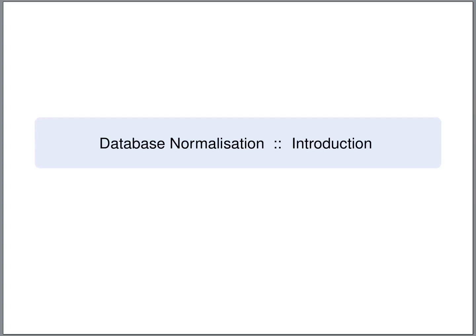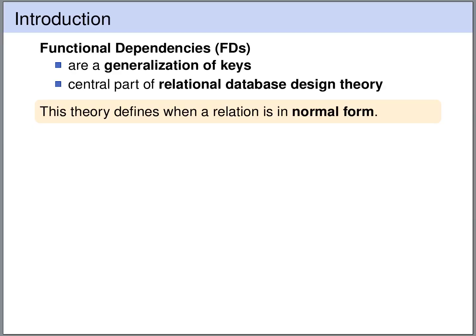We will begin with a brief overview. In this lecture we are going to look at functional dependencies. Functional dependencies are a generalization of keys. A functional dependency is a key for a subset of the columns of a relation. Functional dependencies play a major role in relational database design theory, and based on these functional dependencies, this theory defines when a relation is in a normal form. A normal form is a good shape for a relation.